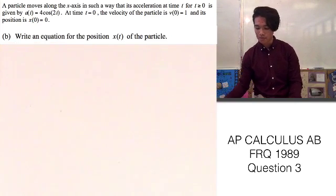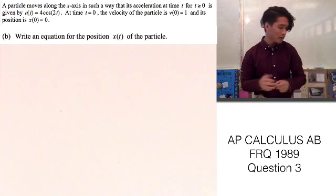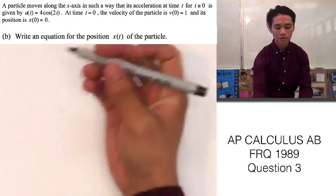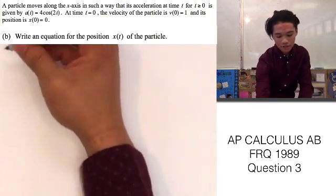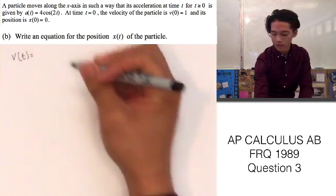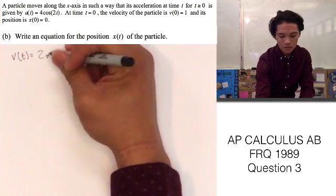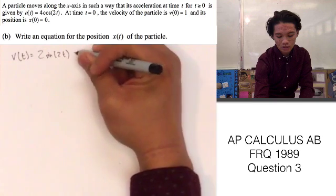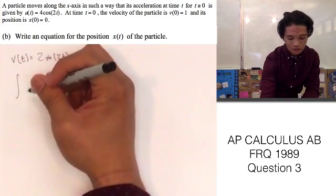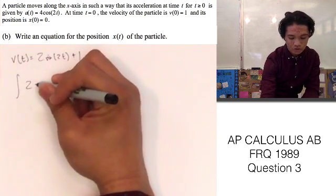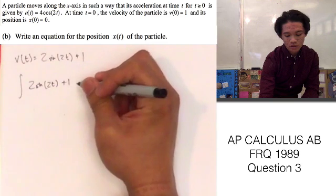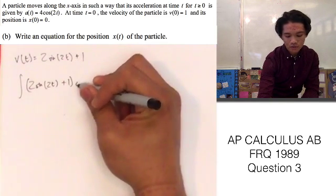Let's go ahead and move on to part B. It says write an equation for the position x(t) of the particle. The position function — we're going to have to integrate v(t). We just solved for v(t), so we can write that down: integral of 2sin(2t) + 1. To find the position, we're going to have to integrate this: integral of 2sin(2t) + 1 dt.